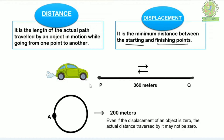In this diagram, a car starts from point P and travels to point Q. The path from P to Q is 360 meters, so the distance traveled is 360 meters. Since P is the starting point and Q is the final point, and the straight-line length between them is also 360 meters, the displacement is also 360 meters in this first case.